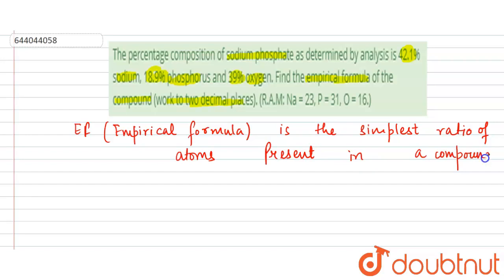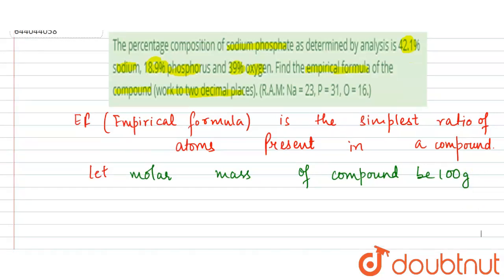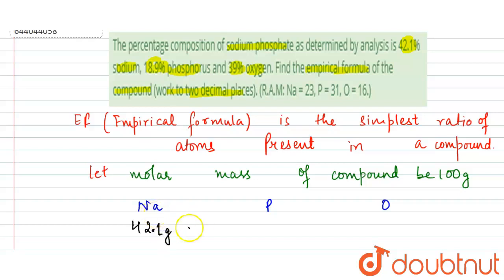We are given the percentage compositions. Let the molar mass of the compound be 100 grams. So if the total molar mass is 100 grams, there are three elements: sodium, phosphorus, and oxygen. That gives us 42.1 grams of sodium, 18.9 grams of phosphorus, and 39 grams of oxygen.